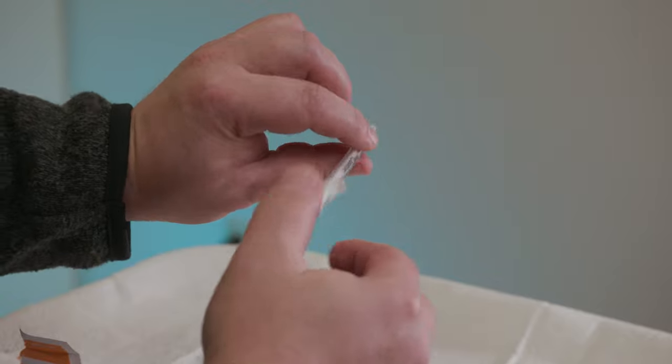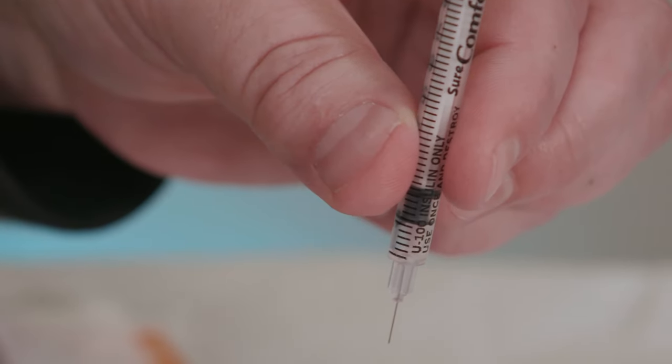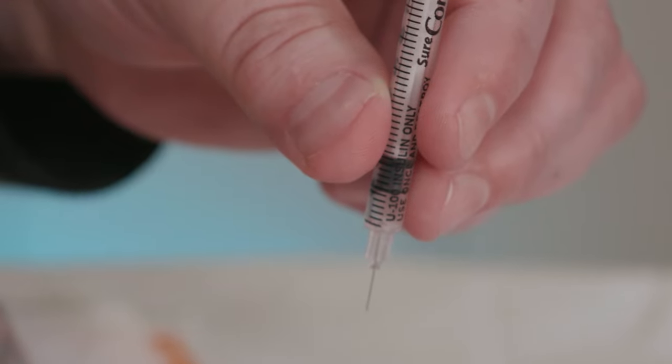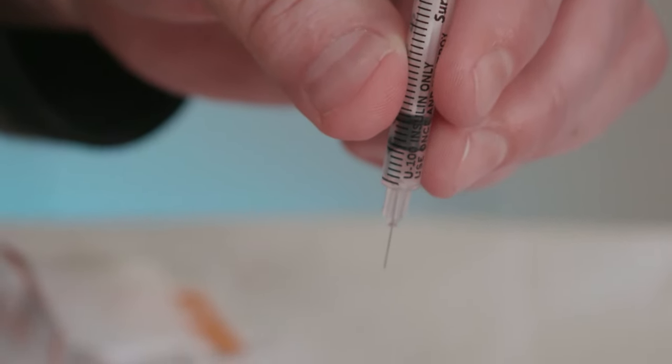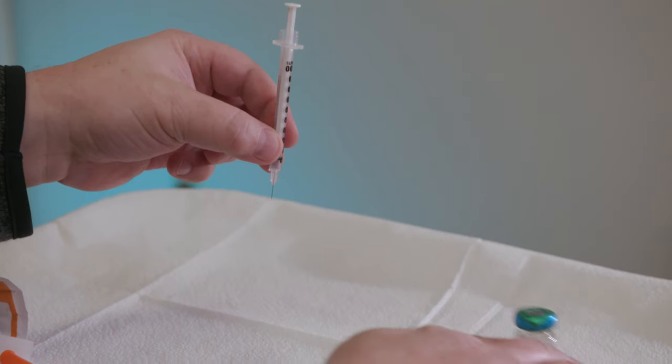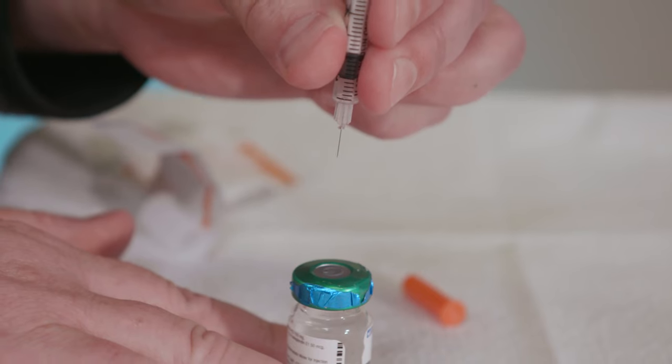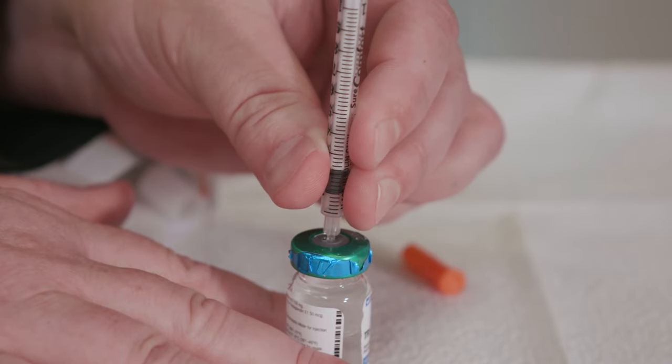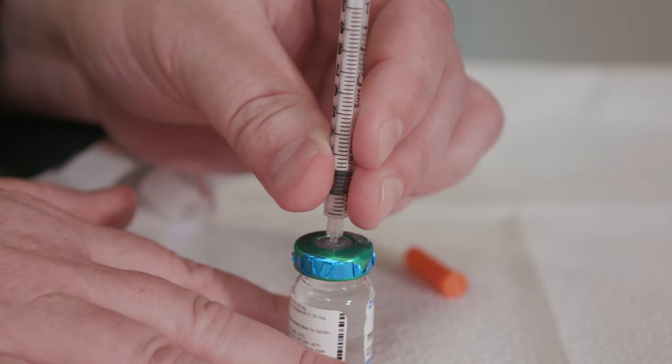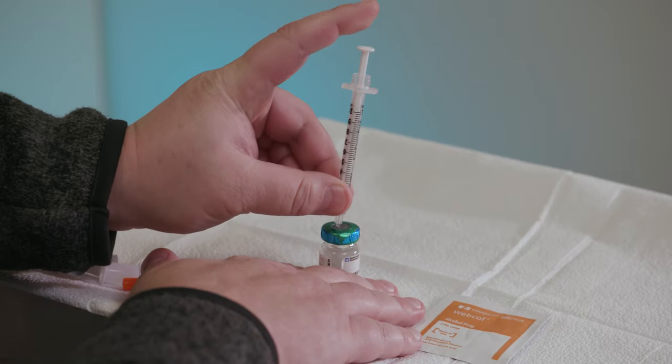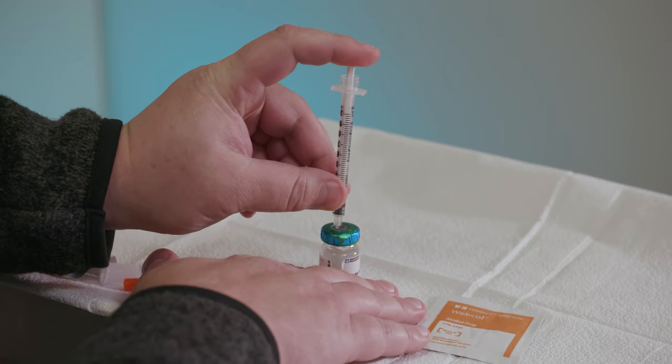Turn the syringe so the needle points down. Hold it between your thumb, index, and middle fingers, like you'd hold a pen or a dart, close to the needle. Hold the medication vial with your other hand. Put the needle through the center of the rubber stopper on the vial. The vial is pressurized, so you need to put air into it before drawing out the medication. Push the plunger down to inject air into the vial.